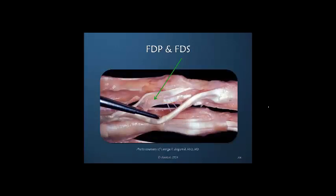The profundus moves distally at the DIP joint and its insertion, coming through the superficialis which is split. The superficialis comes back together and has a very long insertion. These are the vincula providing nutrition to the flexor tendon. One of the reasons we have such difficulty with excursion of the flexor tendons is the significant amount of contact between the profundus and the superficialis in this area.